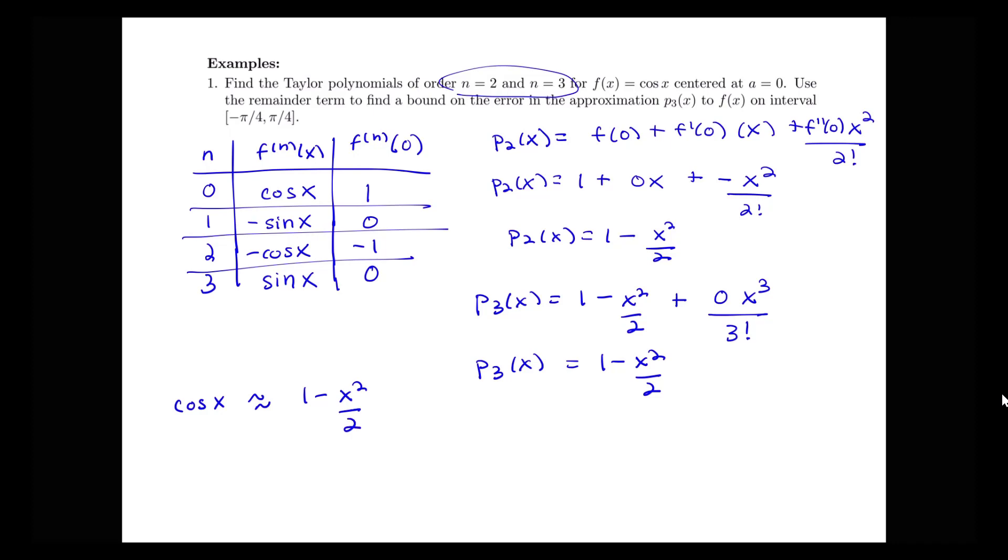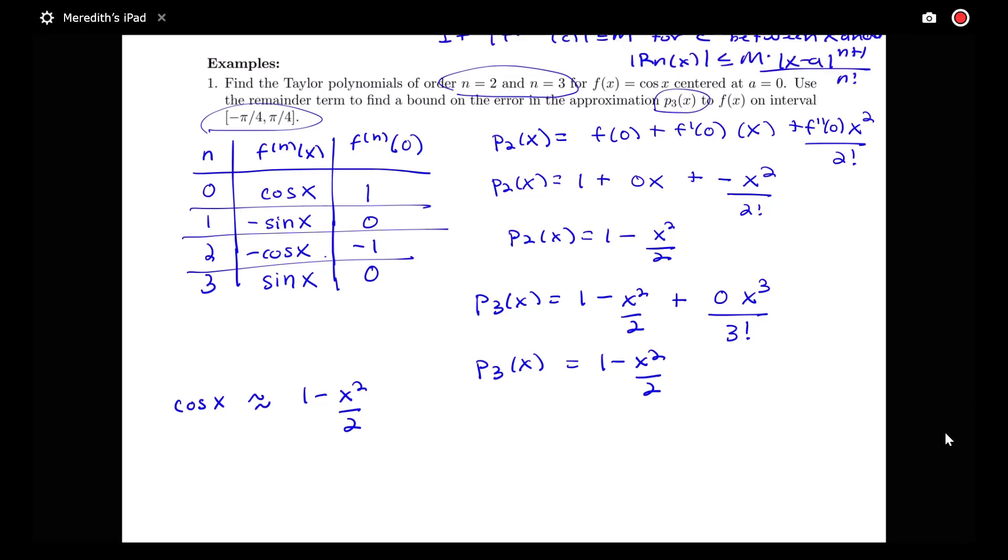So we have that cosine x can be approximated by this 1 minus x squared over 2. So if we were to do that approximation in this interval from negative pi fourths to pi fourths, how good would that approximation be?